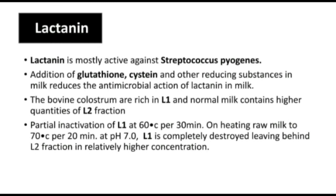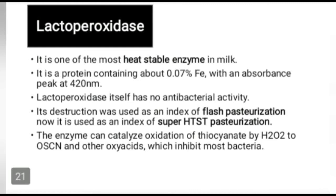Bovine colostrum is rich in the L1 fraction, while normal milk contains higher quantities of the L2 fraction. On heating raw milk to 60°C for 30 minutes, L1 is partially inactivated. On heating to 70°C for 20 minutes at pH 7, L1 is completely destroyed, leaving behind L2. Therefore, the concentration of the L2 fraction becomes higher than that of L1.